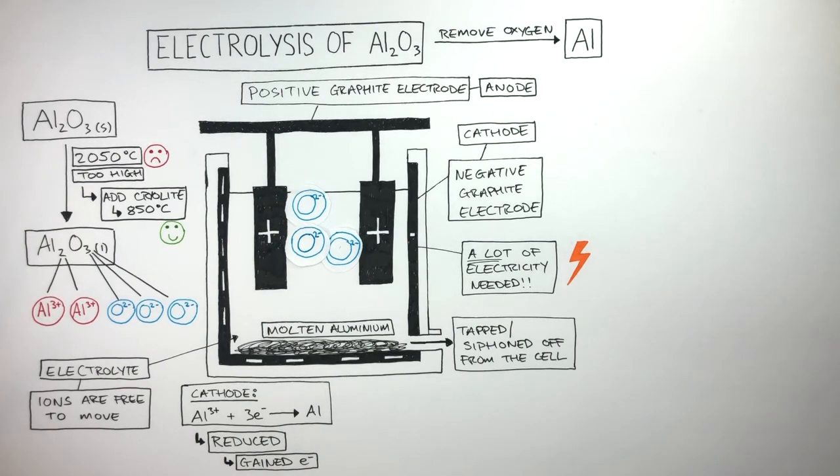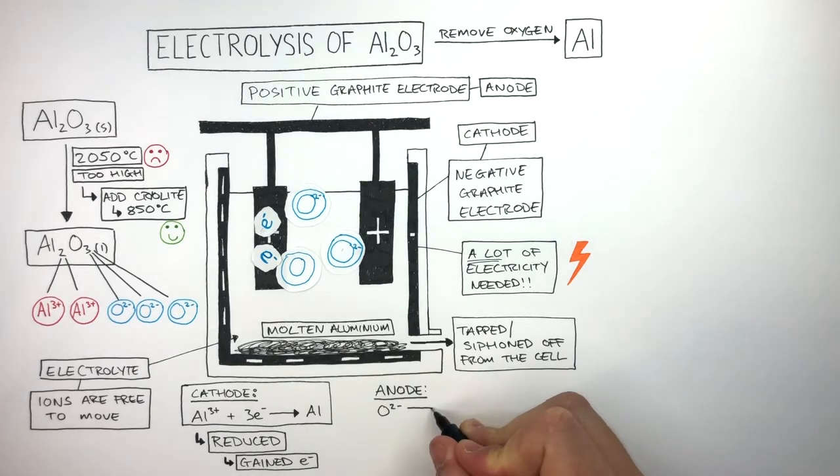Let's now focus on what happens at the anode. Each oxide anion has two electrons more than they should, so they both have a charge of 2-. The oxide anion loses two electrons to form an oxygen atom. So we write this on the half equation as O2- forms an oxygen atom plus electrons.